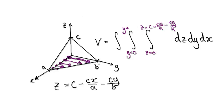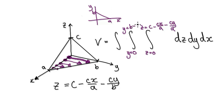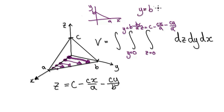But what is that line? Well, this is b on the y-axis and a on the x-axis. So the equation of this diagonal line is b minus (b/a)x. So y goes from zero to y equals b minus (b/a)x.